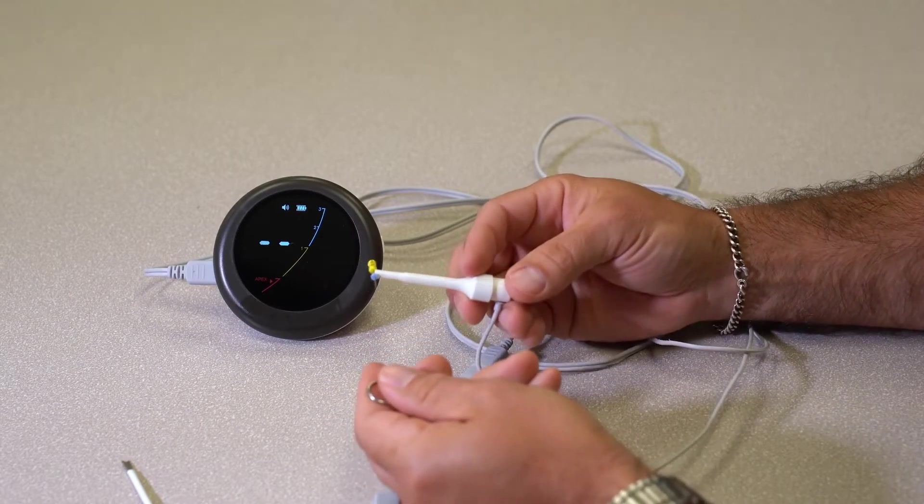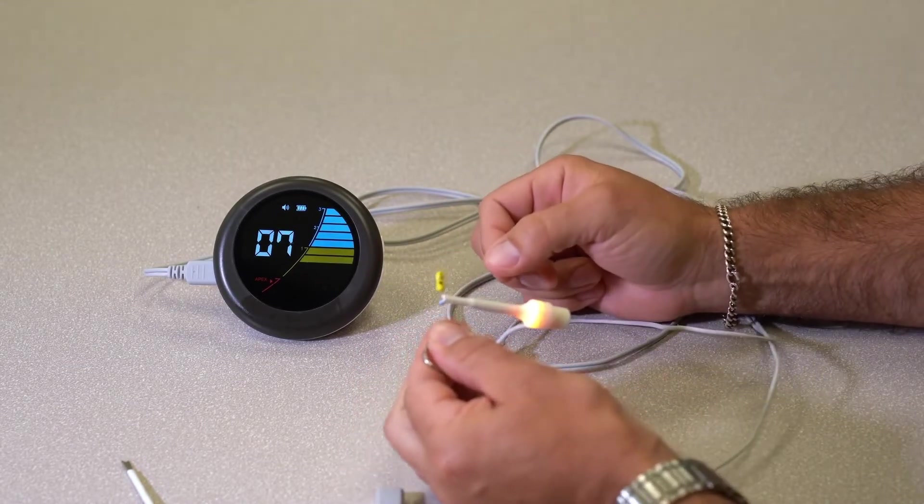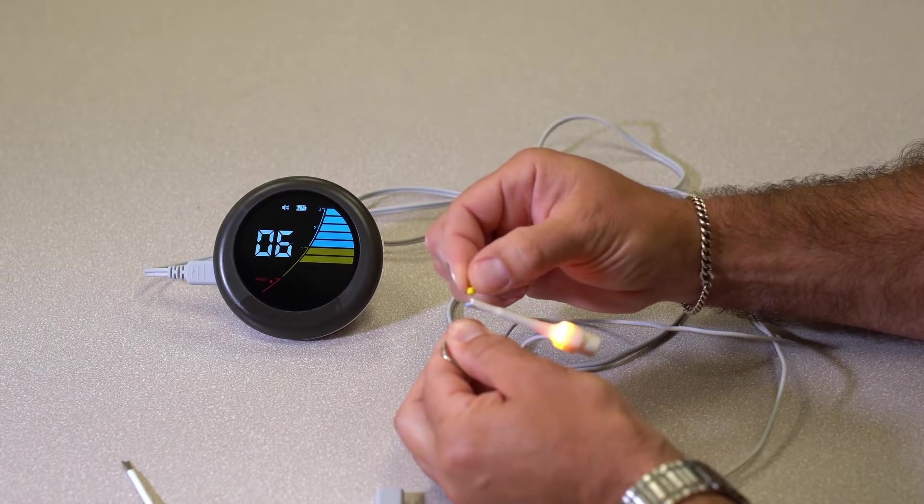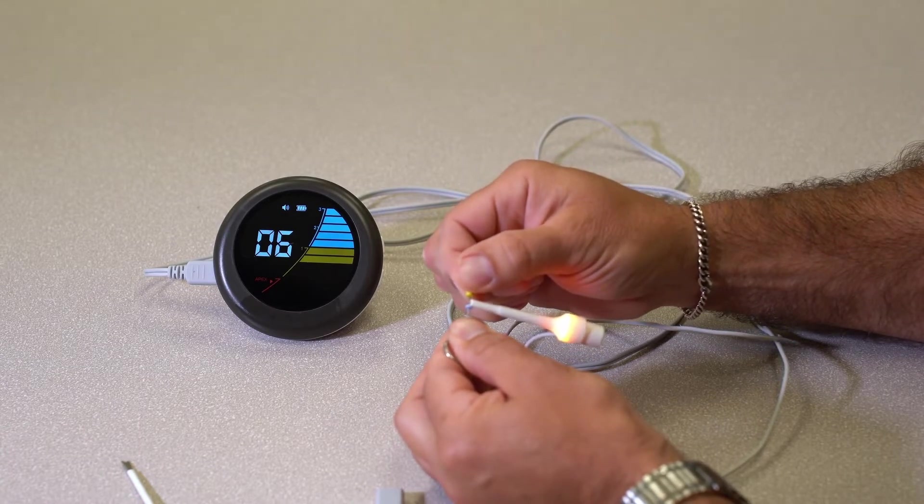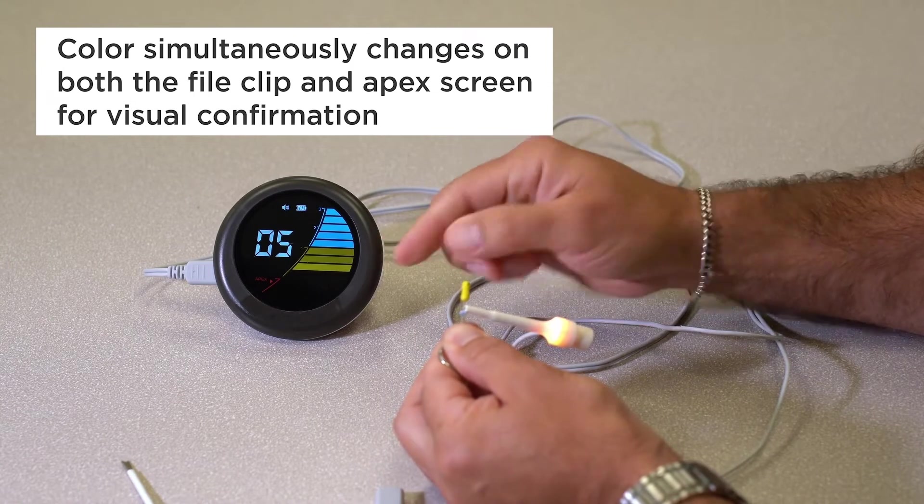For me to simulate this, what I want to show you is once I bring that file in connection with that... Once you've made the connection within the tooth and as you work that file down, you can see as I'm getting closer, the color is changing here as well as here.